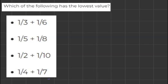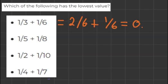So 1 over 3 plus 1 over 6 can be changed to 2 over 6 plus 1 over 6, and 2 over 6 plus 1 over 6 is 3 over 6 which also equals 0.5.